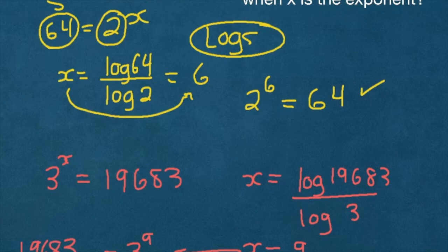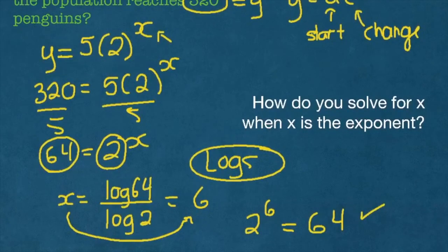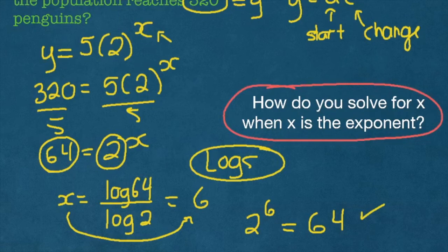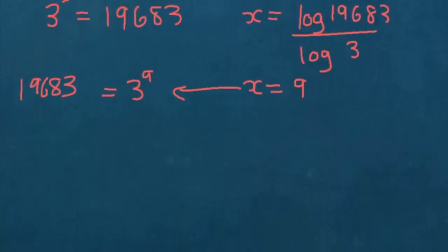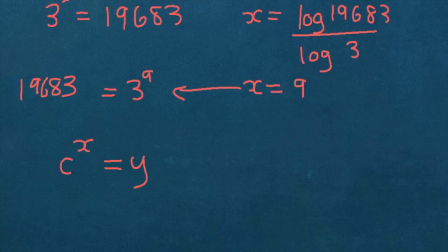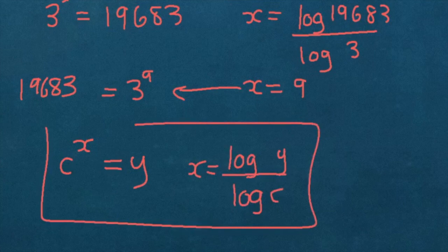So just to recap, we just learned about logarithms, and we learned how to solve for x when x is actually the exponent in these questions. So whenever you see that x is the exponent, you do logs. So remember, in general, the rule will be, if I have, say, some c to the power of x is equal to y. To solve for x, you're going to do log of y over the log of c, and that will give you your x. So this is the general rule.